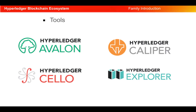Under the tools section, Hyperledger Avalon is a tool that aims to enable the secure movement of blockchain processing off the main chain to dedicated computing resources. Hyperledger Caliper is a blockchain benchmark tool that measures the performance of a blockchain implementation with a set of predefined use cases. Hyperledger Cello facilitates creating blockchain as a service. Hyperledger Explorer is a web app tool used to view, invoke, deploy, or query blocks, transactions, and the associated data or network information.